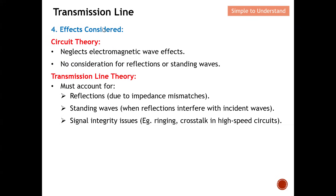Under circuit theory, we neglect all electromagnetic wave effects — there is no consideration for reflection or standing waves. For transmission line theory, we need to account for reflection (S11), which arises from impedance mismatch. To minimize impedance mismatch, we insert an impedance transformer. We also need to take care of standing waves when the reflected wave interferes with the incident wave, and we must address signal integrity issues such as ringing and crosstalk in high-speed circuits.